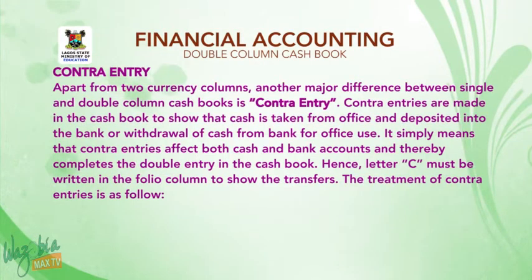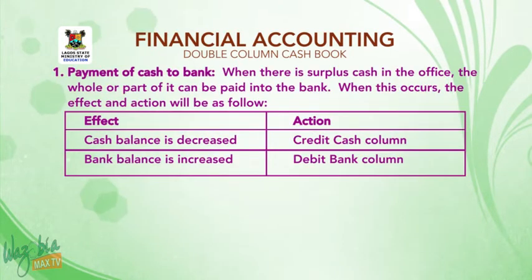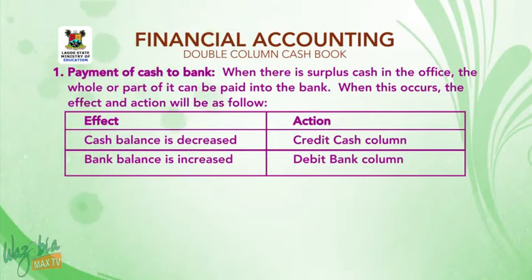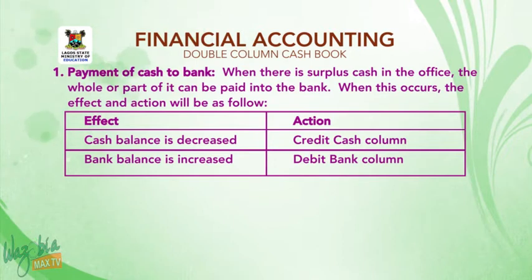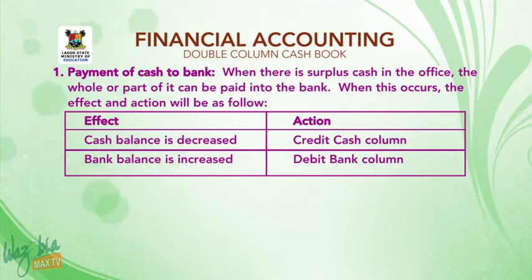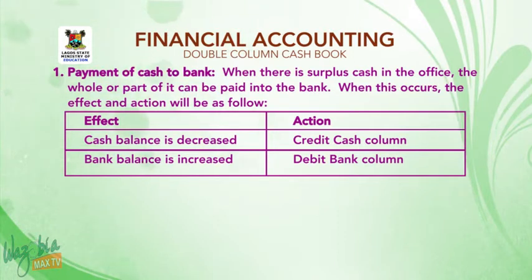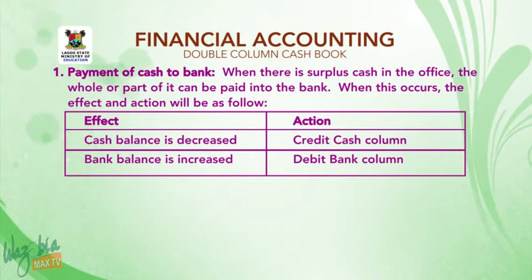Contra-entries are made to show that cash is taken from the office and deposited into the bank, or cash is withdrawn from the bank for office use. The treatment of contra-entries is as follows. Number one: payment of cash to bank. When there is surplus cash in the office, part or all of it can be paid into the bank. Effect 1: cash balance is decreased — action: credit cash column. Effect 2: bank balance is increased — action: debit bank column.